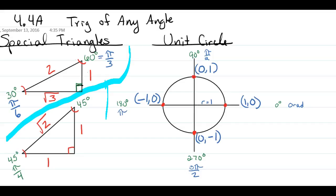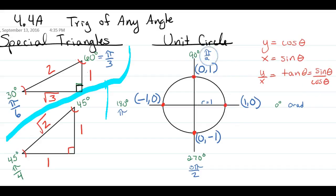Recalling our fundamental trig identities: x equals cosine θ, y equals sine θ, and y/x equals tangent θ — or tangent equals sine θ over cosine θ. So on this circle, the x value is cosine and the y value is sine at each labeled point. Having those labeled will make it very quick to reference values, and you should be prepared for any trig problem going forward.